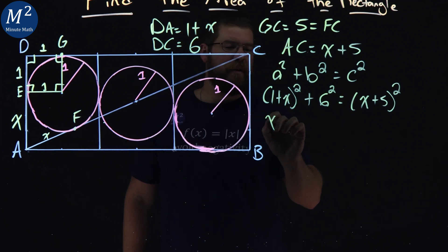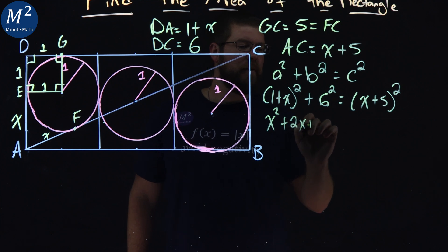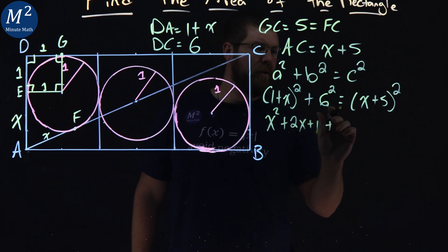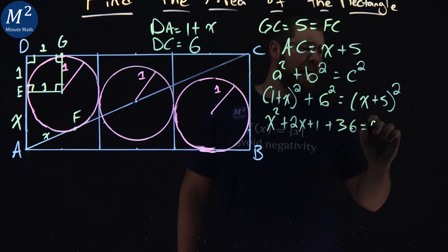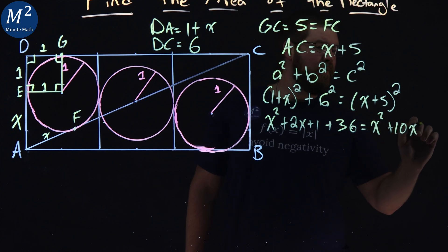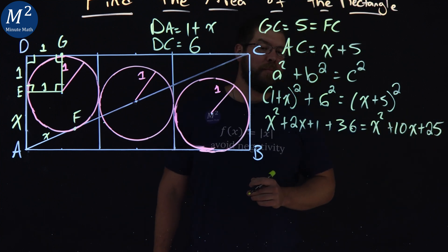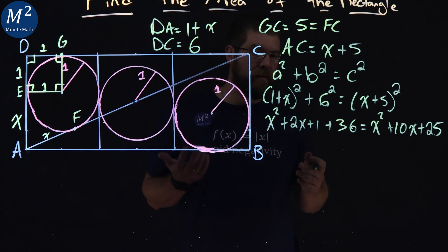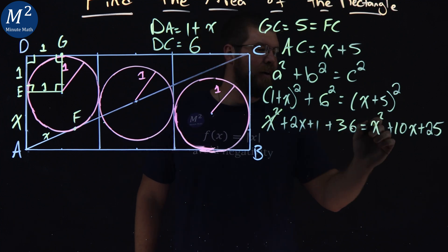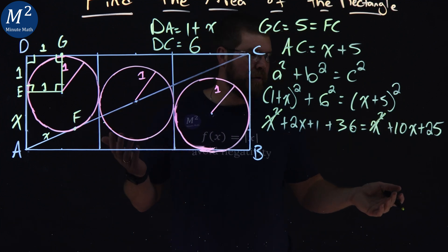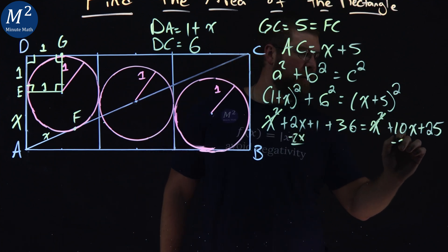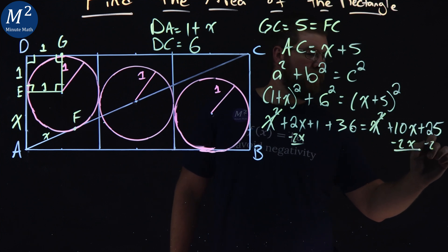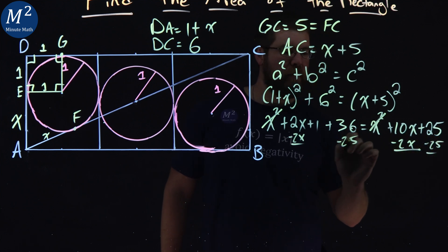Let's do some algebra here. 1 plus X all squared, so we need X squared plus 2X plus 1 plus 6 squared is 36, is equal to X plus 5 all squared, X squared plus 10X plus 25. And then from here we want to get everything together if we can. X squared cancel left and right.